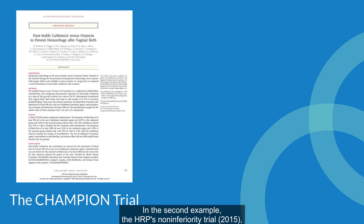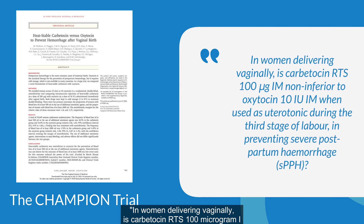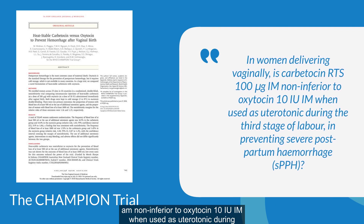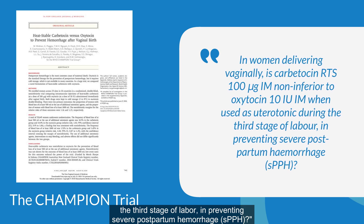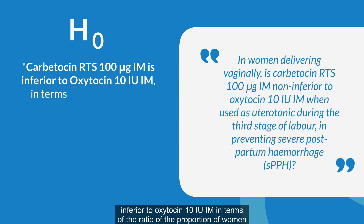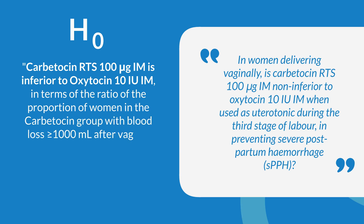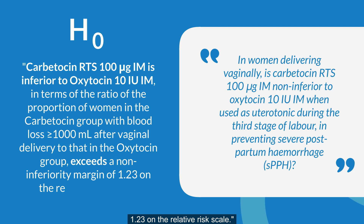In the second example, the HRP's non-inferiority trial, 2015 — heat-stable carbeticin versus oxytocin to prevent hemorrhage after vaginal birth, the CHAMPION trial — had the following as one of the research questions: In women delivering vaginally, is carbeticin RTS 100 microgram IM non-inferior to oxytocin 10 IU IM when used as uterotonic during the third stage of labor in preventing severe postpartum hemorrhage (SPPH)? The null hypothesis, H0, would be: Carbeticin RTS 100 microgram IM is inferior to oxytocin 10 IU IM, in terms of the ratio of the proportion of women in the carbeticin group with blood loss greater than or equal to 1000 milliliters after vaginal delivery to that in the oxytocin group, and exceeds a non-inferiority margin of 1.23 on the relative risk scale.